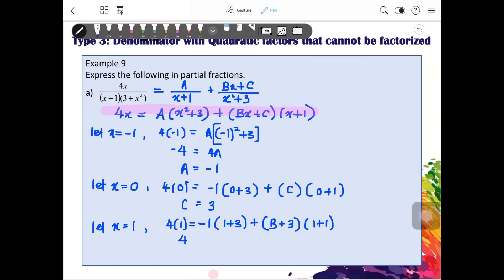So we will get 4 equals to negative 4 plus 2B plus 3. And I solve this, I will get 4 plus 4 equals to 2B plus 3. I will get 2B plus 3 equals to 8, B equals to 1.